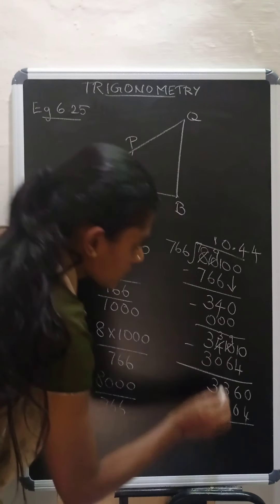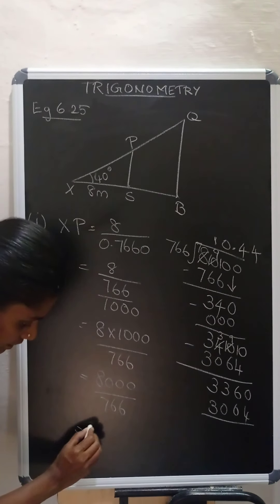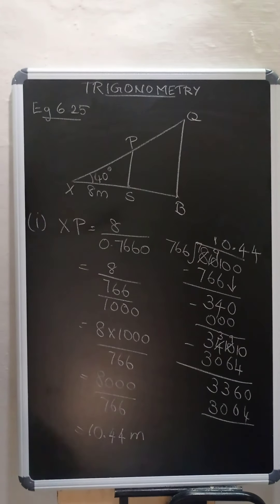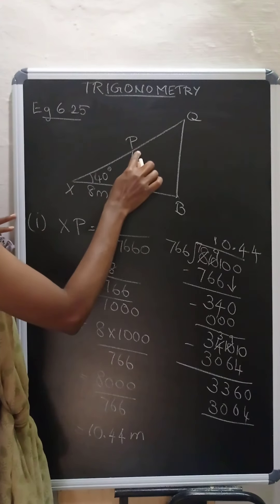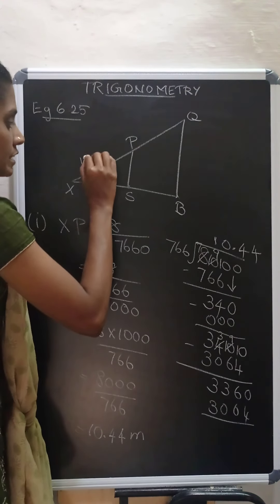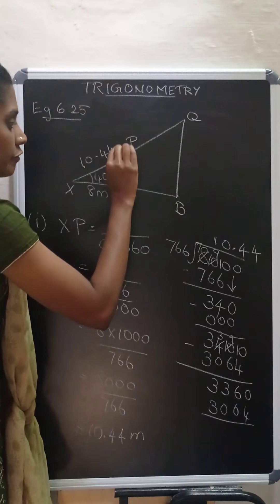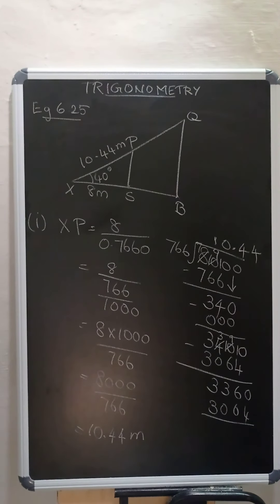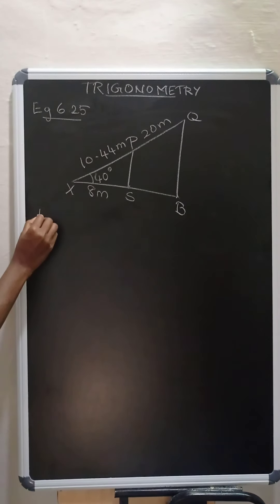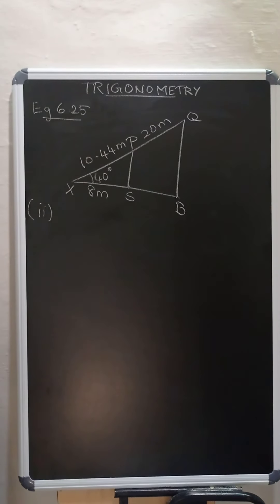This is equal to 10.44 meters. So the distance between X and the top of the smaller tree is 10.44 meters.